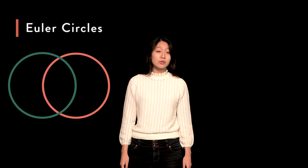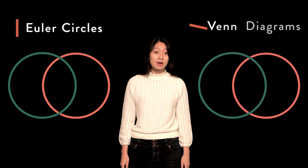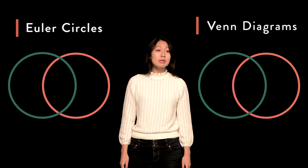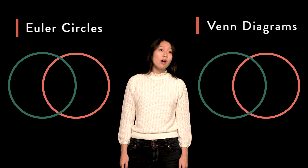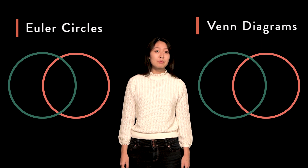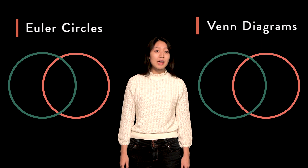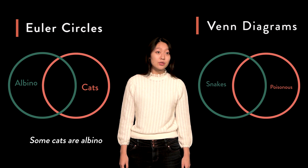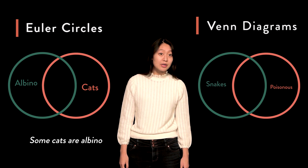To get a better sense of how particular affirmative and negative propositions compare to one another, we can once again turn to Euler circles and Venn diagrams. Remember from the previous lessons that in the case of Euler circles, we must look to spatial relations to understand the propositions. On the left, we are supposed to recognize that a portion of the area in the circle labelled 'cats' is included in the circle labelled 'albino.'